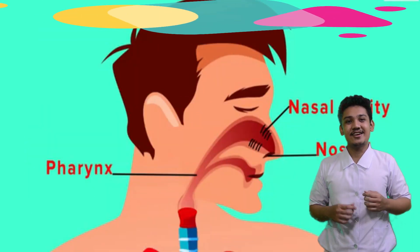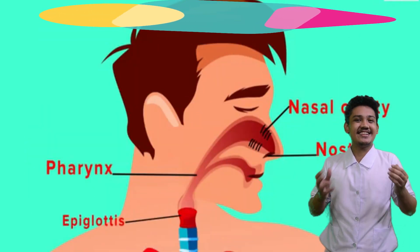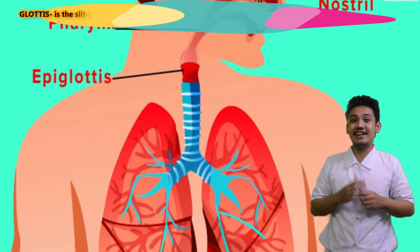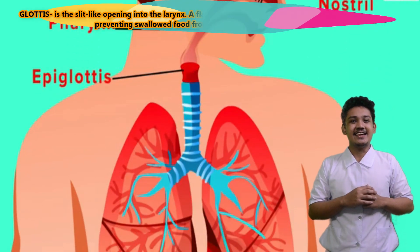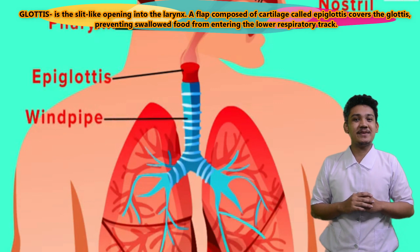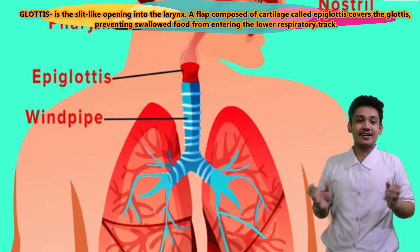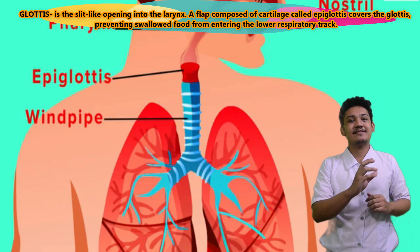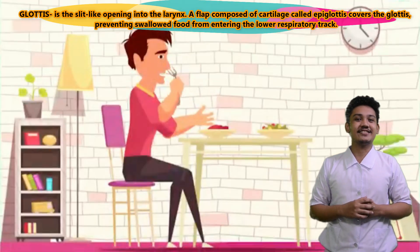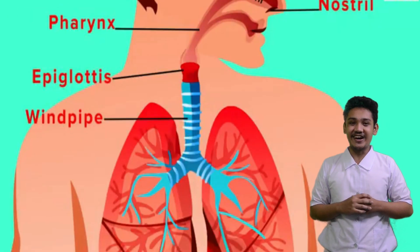Next is the glottis. It is the slit-like opening into the larynx. A flap composed of cartilage called the epiglottis covers the glottis, preventing swallowed food from entering the lower respiratory tract.